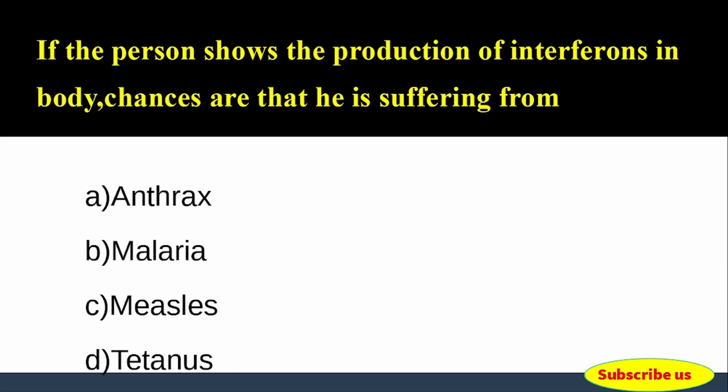Next question: If a person shows the production of interferons in the body, chances are that he is suffering from — Options: A) Anthrax, B) Malaria, C) Measles, D) Tetanus.